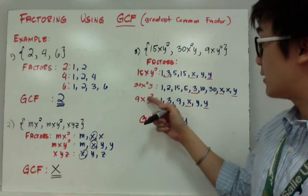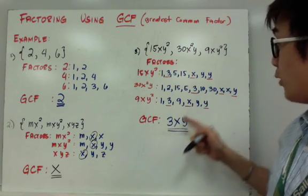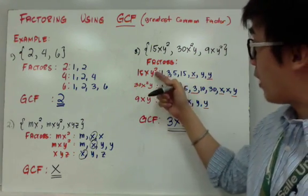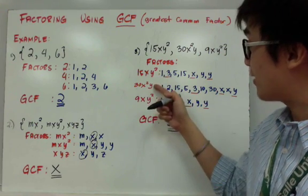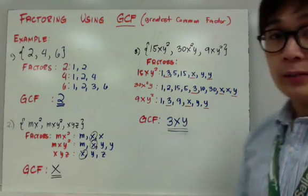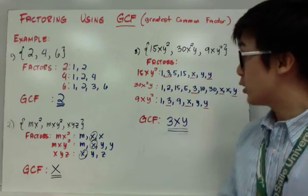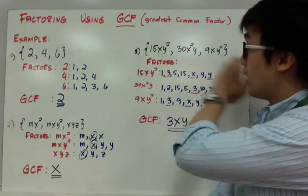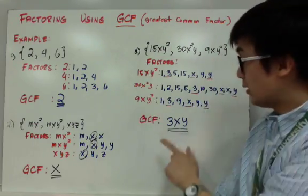the greatest common factor is the lowest exponent. So I only have 1x. And for my y, the lowest exponent is this one. So that will be my greatest common factor for y. So the GCF for these terms right here is 3xy.